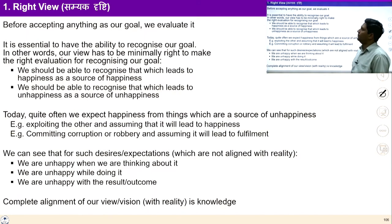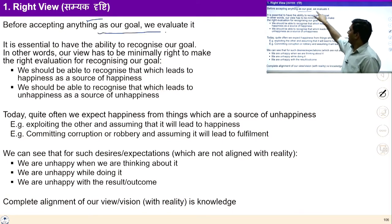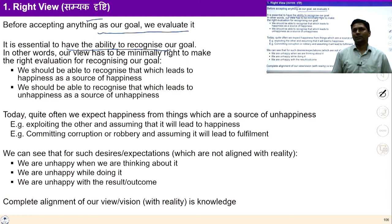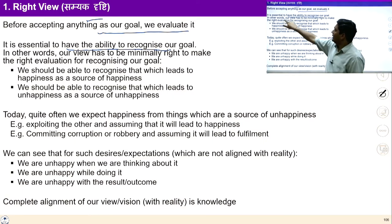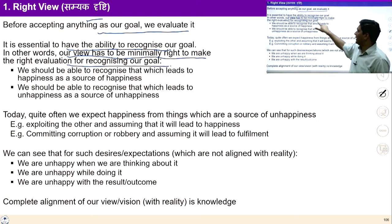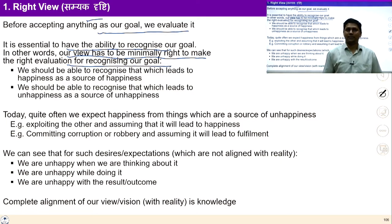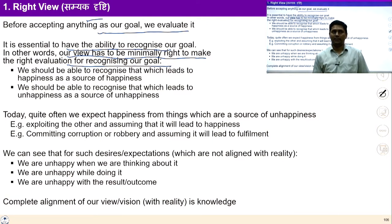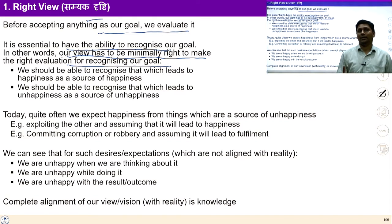Let us start from step number one: Right View. Before accepting anything as our goal, it is required to evaluate it properly. It is essential to have the ability to recognize our goal. Right means to see the reality as it is. Our view has to be minimally right to make the right evaluation for recognizing our goal. If we realize the need to ensure right understanding and right feeling in the self, then these become our goal. The more we progress towards understanding, the more the ability to see reality and evaluate gets better — it is an iterative process.